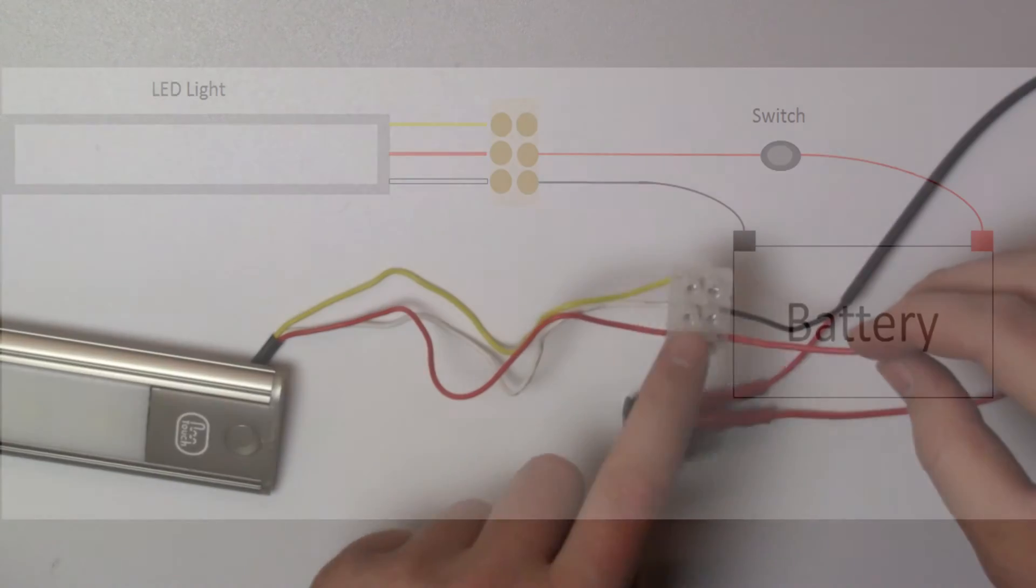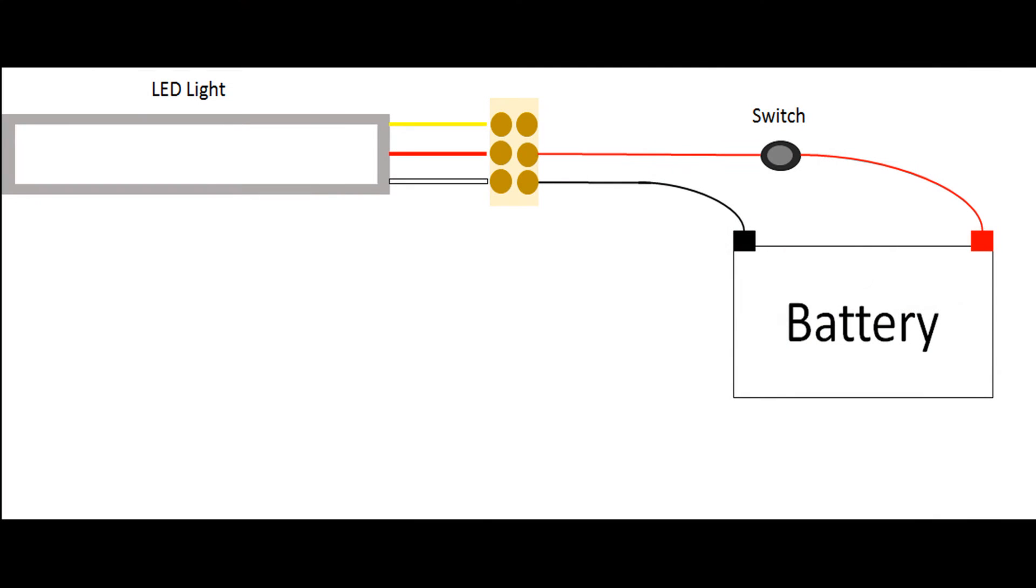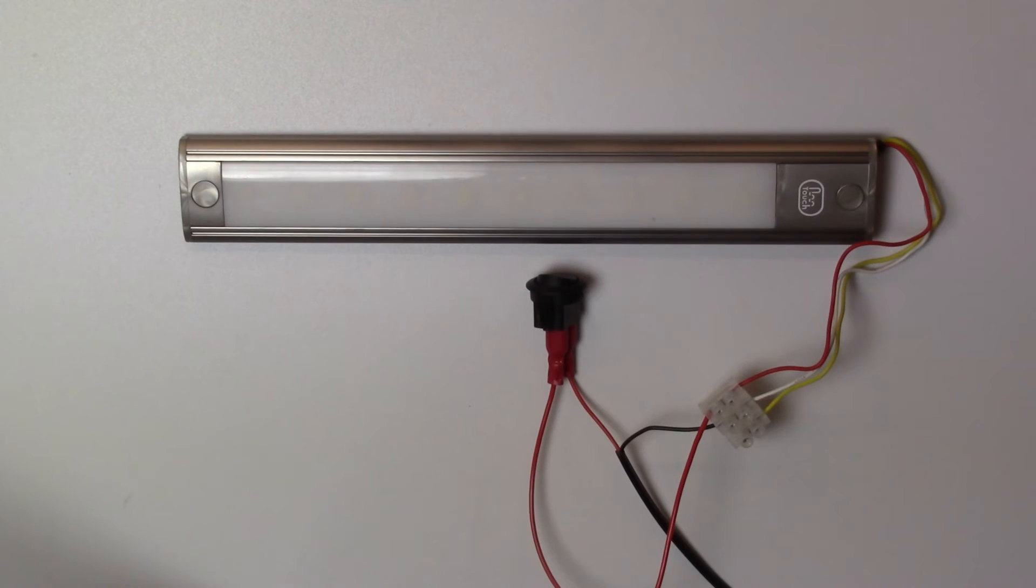This feeds the power to the light continuously. Again, the diagram shows it's a relatively simple circuit.